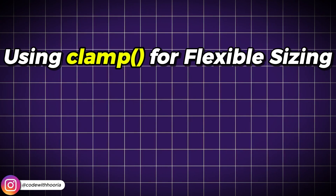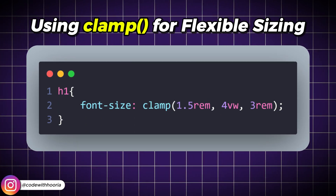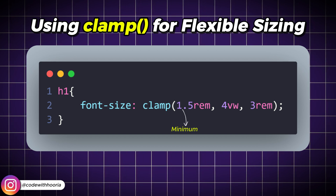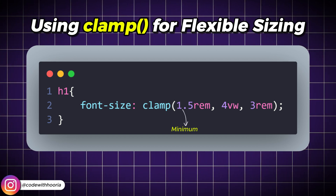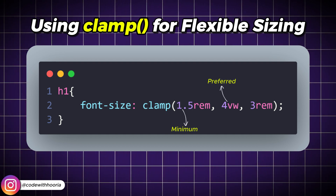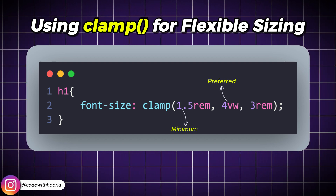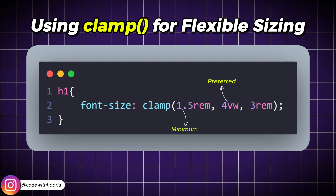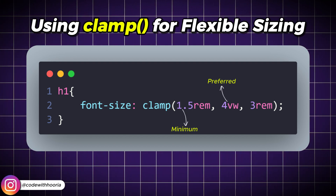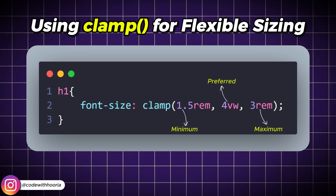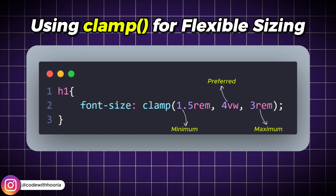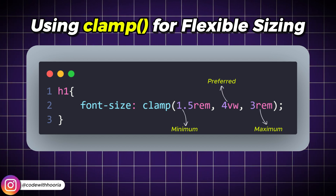Let's start with clamp. This property allows you to set a value that adapts between a minimum, preferred, and maximum size. The value 1.5rem sets the minimum font size, meaning the text won't get smaller than this, no matter how narrow the screen is. The value 4 viewport width acts as the preferred size, which means the text will scale based on 4% of the viewport width, adjusting automatically as the screen size changes. Lastly, 3rem sets the maximum font size, ensuring that the text won't grow bigger than this, even on large screens.